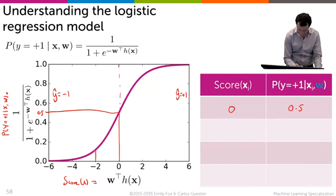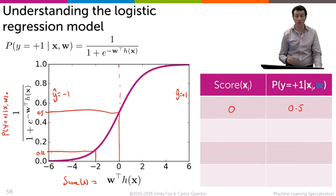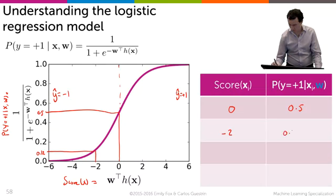What would happen to our prediction? The probability y equals plus 1 is actually 0.12 if you plug that in. So minus 2 gives you 0.12.